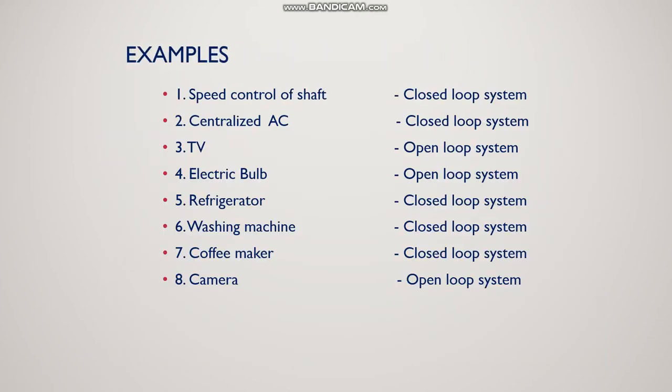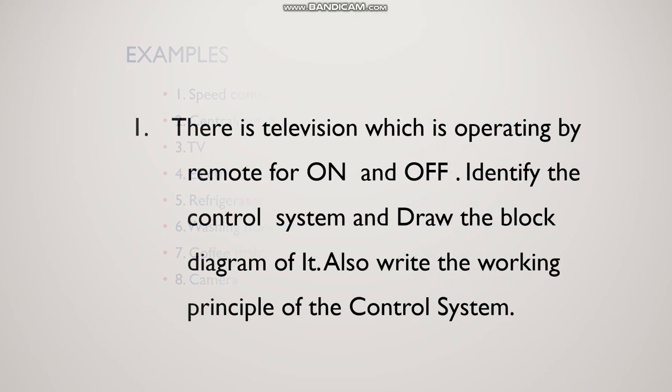Some further examples: speed control of a shaft is a closed loop system because a speed sensor is needed to identify speed. Centralized AC with a temperature sensor is a closed loop system. TV remote — there is no sensor, we switch on and off as needed — this is an open loop system. Electric bulb is also open loop. Refrigerator has sensors, so it is a closed loop system. Washing machine has sensors — closed loop system. Coffee maker is a closed loop system. Camera is an open loop system.